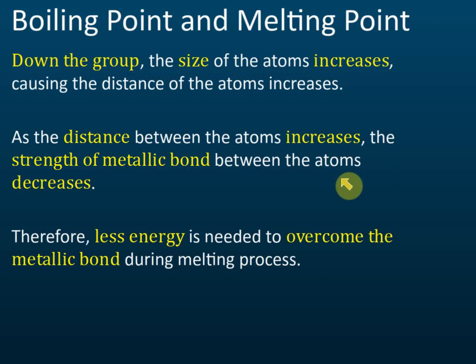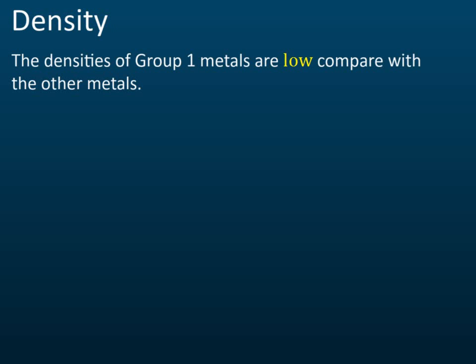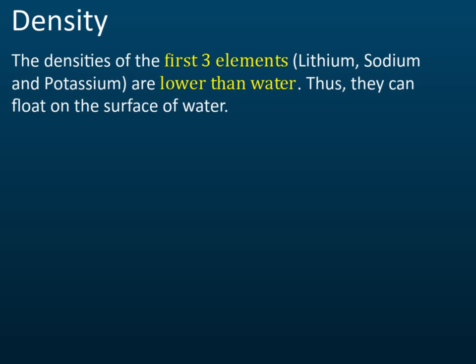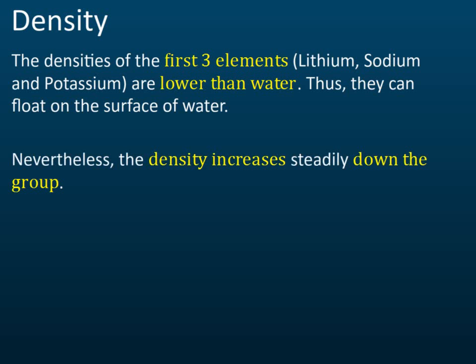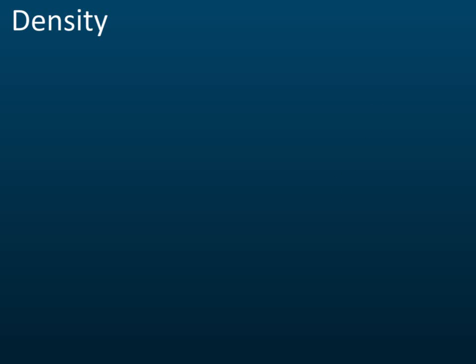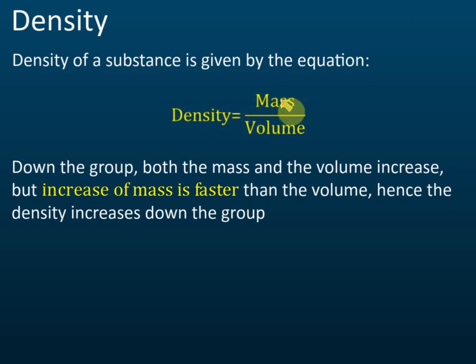For density: group one metals have low density compared to other metals. The first three have density lower than water, so they float on the water's surface. However, density increases down the group because density equals mass over volume, and the increase in mass going down the group is proportionally greater than the increase in volume. This explanation is the same as for group 18.